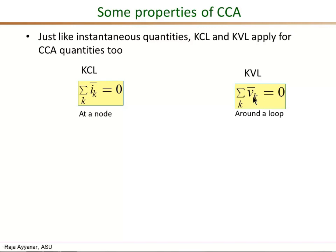That is sigma k Vk bar going around a loop is 0, and that is fairly easy to prove. This is the instantaneous case here, so I1, I2, I3 are all entering this node. Their sum is equal to 0. That's the basic instantaneous KCL.